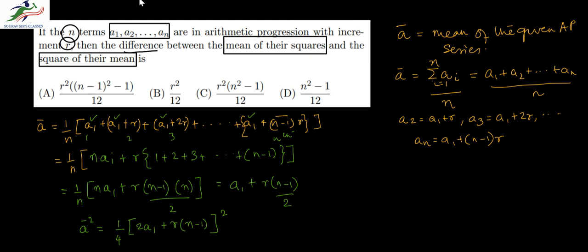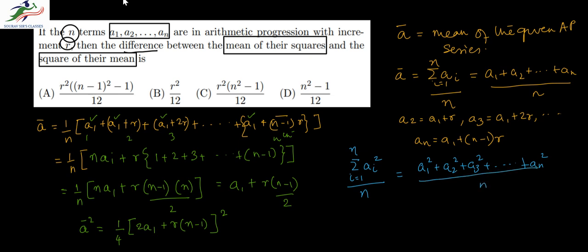Now, what is the expression for the mean of the squares? Mean of squares means (Σai²) / n for i running from 1 to n, which equals (a1² + a2² + a3² + ... + an²) / n. This can be written as (1/n)·[a1² + (a1+r)² + (a1+2r)² + ... + (a1+(n−1)r)²].